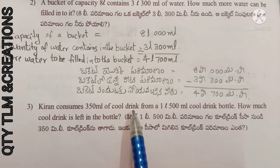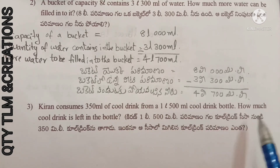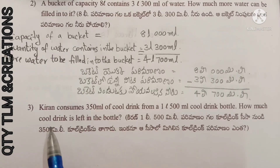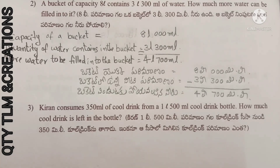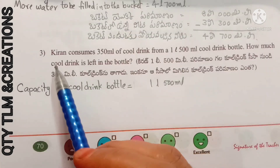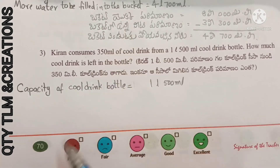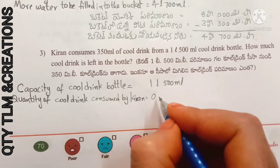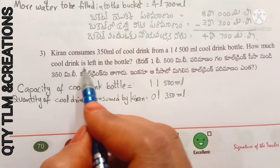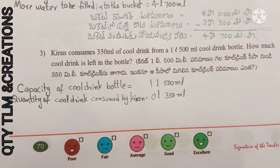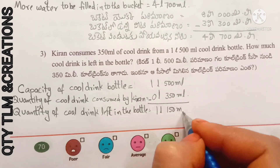Next question: Kiran consumes 350 milliliters of cold drink from a 1 liter 500 milliliters cold drink bottle. How much cold drink is left in the bottle? Capacity of the cold drink bottle equals 1 liter 500 milliliters. Quantity of cold drink consumed by Kiran equals 350 milliliters, that means 0 liters 350 milliliters. Quantity of cold drink left in the bottle equals 1 liter 150 milliliters.